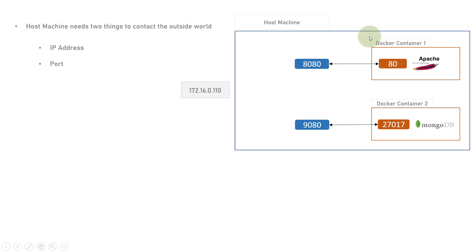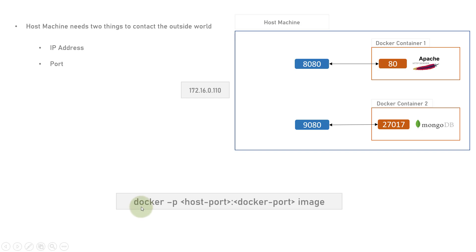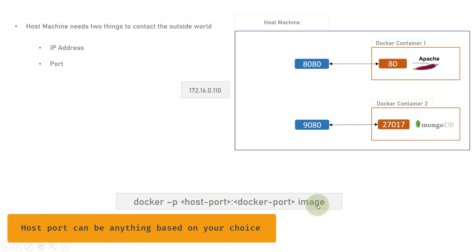If anyone calls port 8080, it will internally forward or relay all requests to port 80 of Docker container 1. If someone sends a request to 9080, it will be forwarded to Docker container 2 on port 27017. For example, if you want to read all users stored inside MongoDB, the request will come in on 9080 and be forwarded to Docker container 2 on port 27017 using the -p flag. This links the host port to the docker container port.